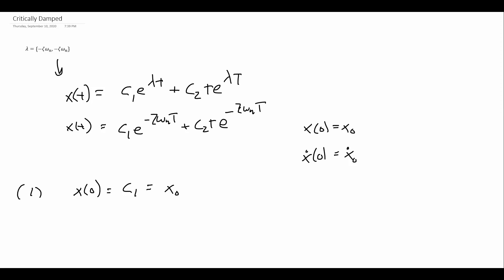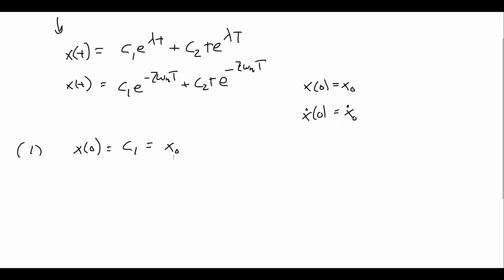Now, we want to take the time derivative so that we can apply our second initial condition. So I want to find ẋ(t). Let's take the x(t) expression and differentiate it with respect to time. For the first term, we're going to have c₁. We have the derivative of an exponential, which is going to drop its exponent out in front, and then we're left with what's left over.